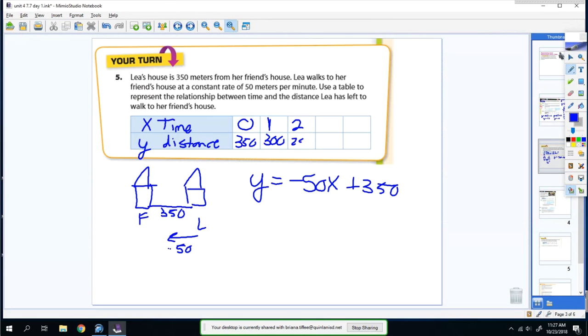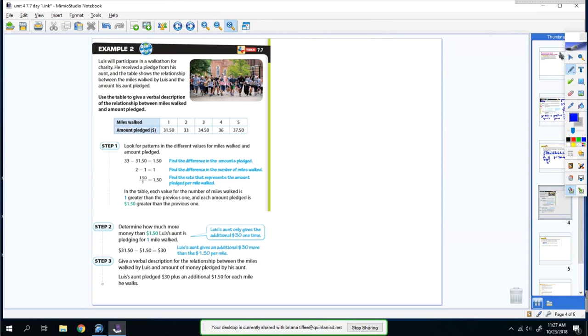At 2 minutes, it'd be 250 meters left. At 3, 200 meters left. At 4, it would be 150 meters left, and so on. It'll take her about 7 minutes to walk to her friend's house. Alright, Example 2.